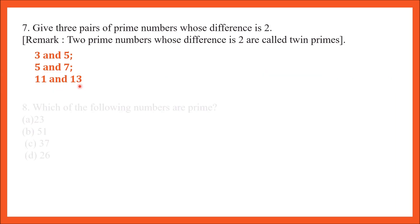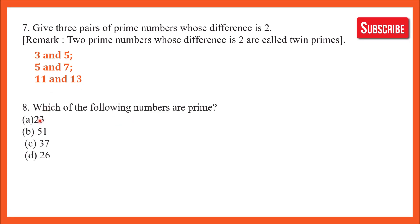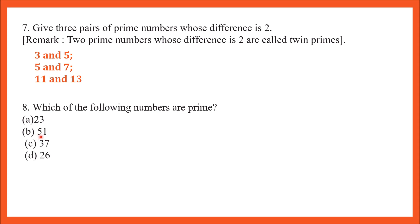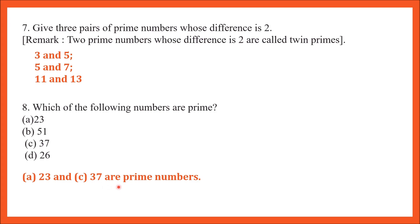Question number 8: which of the following numbers are prime? 23 — yes, it is a prime number. 51 — no, it is not prime because 17 × 3 = 51, so it is divisible by both 17 and 3. 37 — yes, it is a prime number, not appearing in any other multiplication table. 26 — no, it is not prime because 13 × 2 = 26. So 23 and 37 are prime numbers.